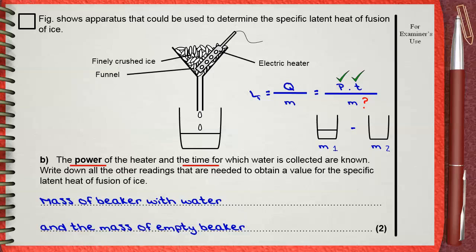Mass of beaker with water, this is one mark. Mass of empty beaker, this is the second mark.